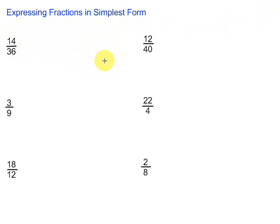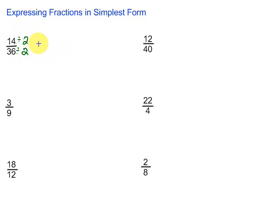None of these fractions are in simplest form, so let's take a look at them and get them there. This first one, 14 over 36. Well, if both pieces of a fraction are even, we can always divide it by 2. So let's start there — divide 14 by 2 and divide 36 by 2. Remember, if we divide by something on top, we also have to do the same thing on the bottom, otherwise our fraction will take on a different value. So 14 divided by 2 gives us 7, and 36 divided by 2 is 18.